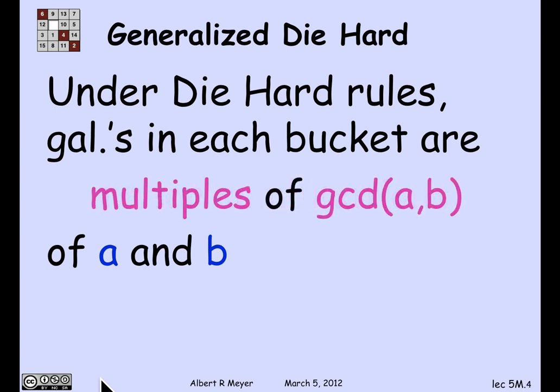The point is that linear combinations of A and B are the same as multiples of the GCD. The reason is that the GCD is a divisor of A and B — it's a common divisor — and therefore it divides any linear combination of A and B. So any linear combination of A and B is a multiple of the GCD. And the GCD is itself a linear combination, so linear combinations of A and B are the same as multiples of the GCD.